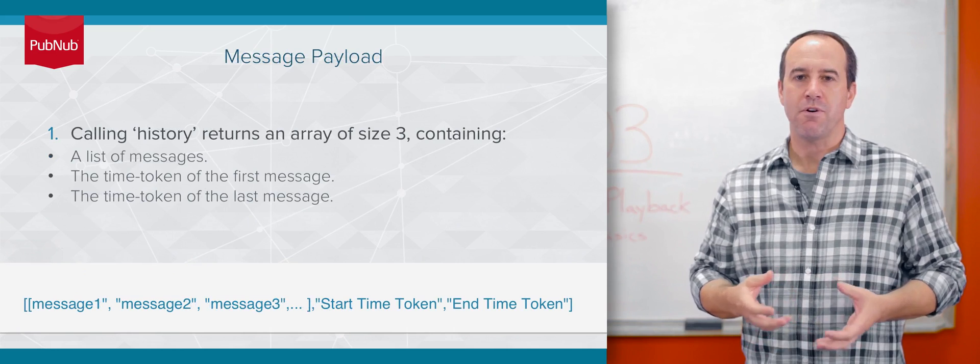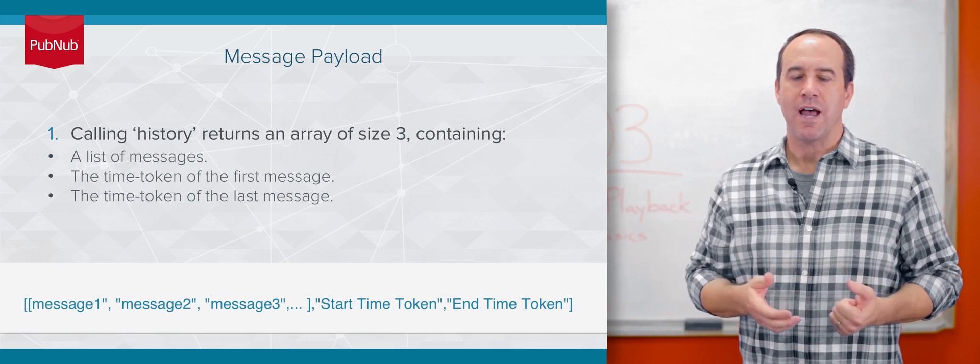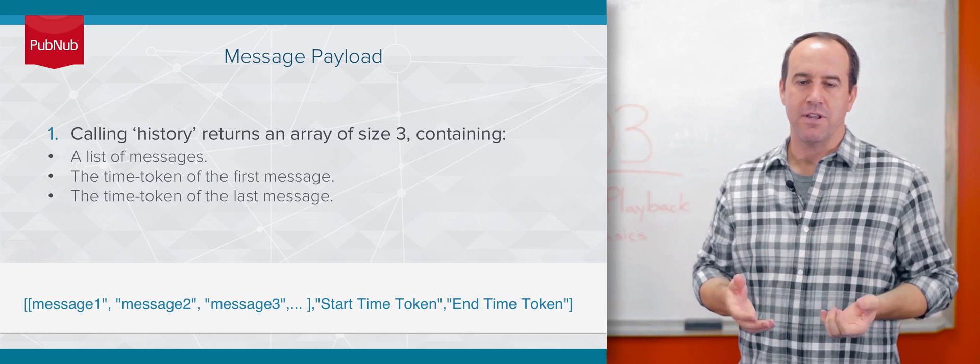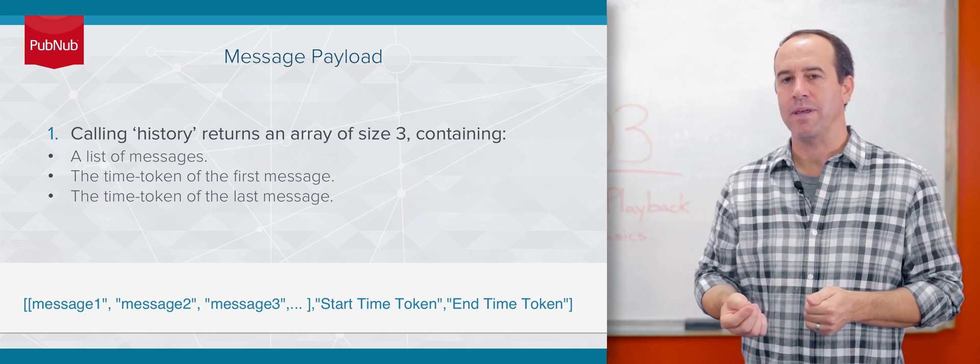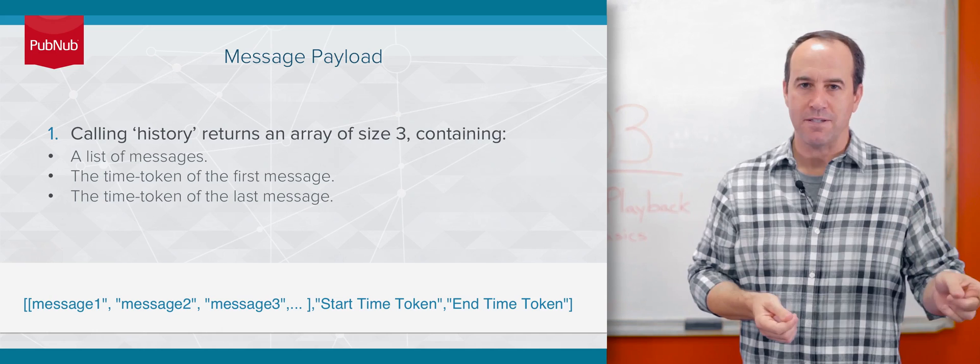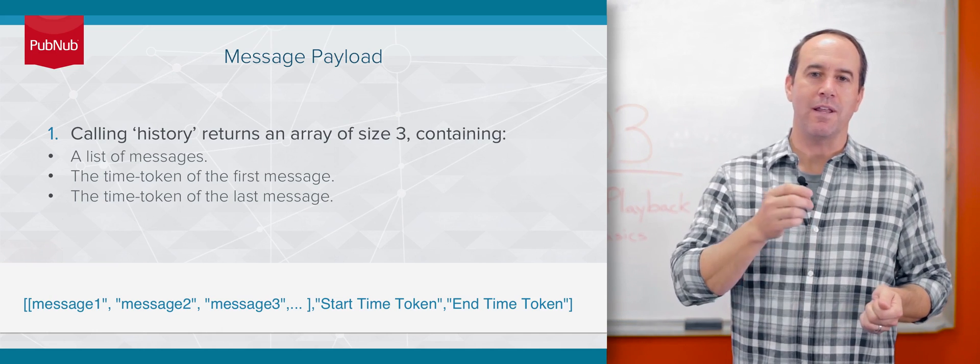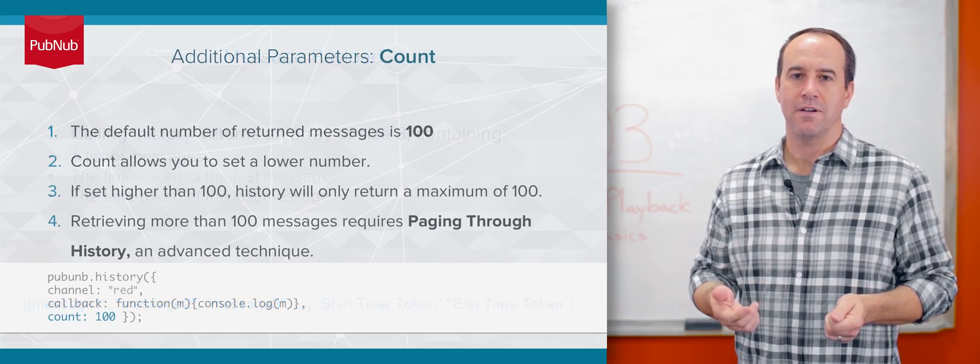When you receive those messages, the format will be an array of size three. The first element is the list of messages returned. The second element is the time token of the first message in that list, and the last element is the time token of the last message.